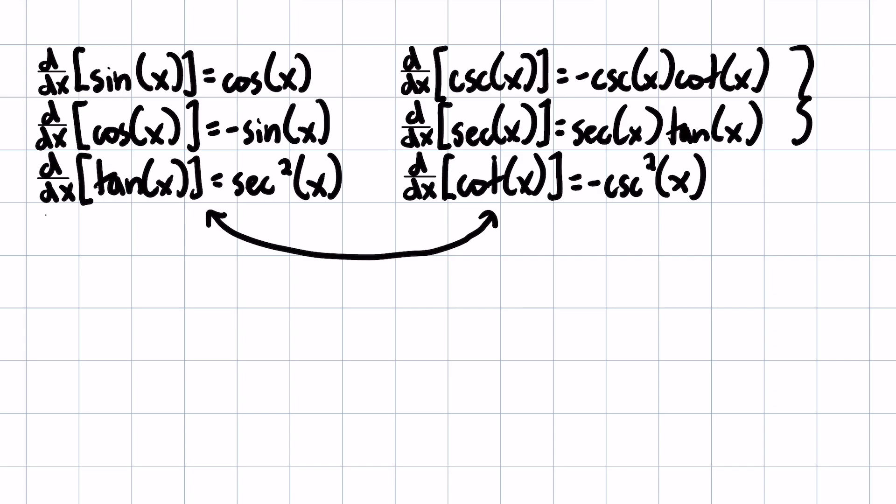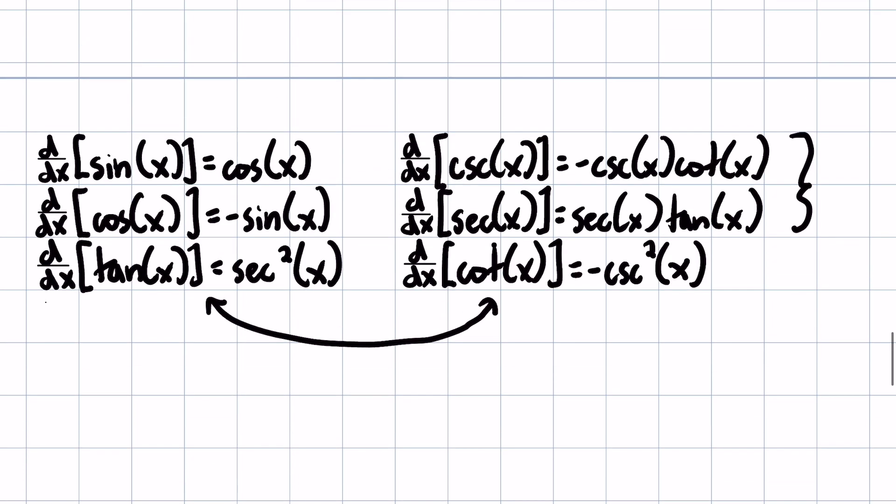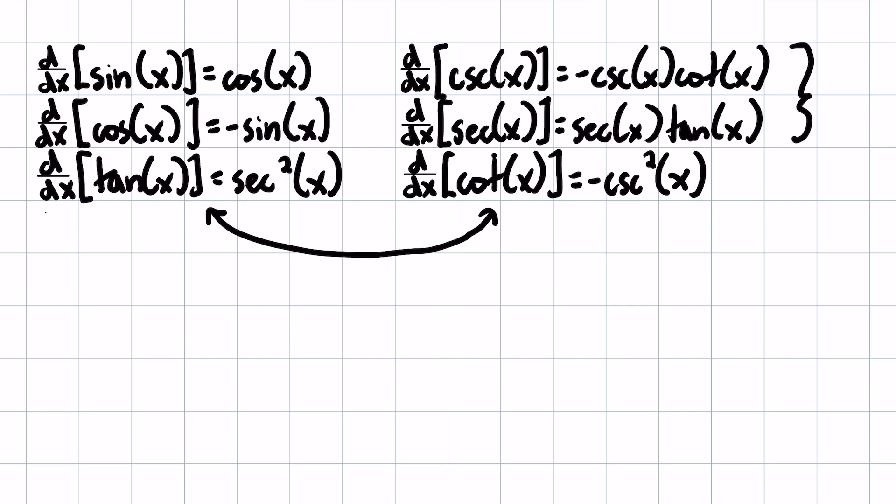Just putting a co in front versus not. So it's itself and then either tangent or cotangent corresponding to whether it was cosecant, you get cotangent, secant, you get tangent. So yeah, that's sort of how I memorized these.